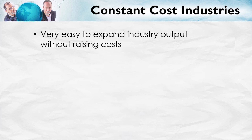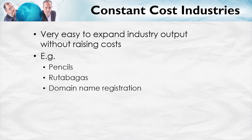A constant cost industry is one where it's very easy to expand output without pushing up costs. For example, pencils, rutabagas, and domain name registration are all constant cost industries.